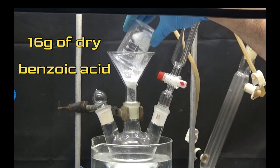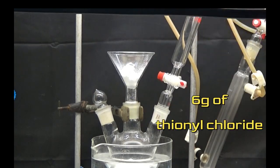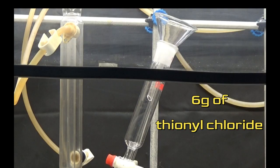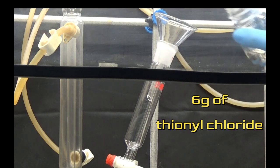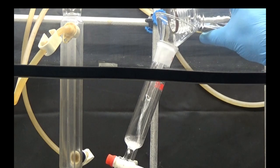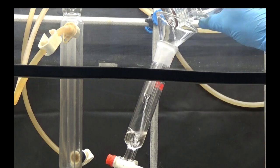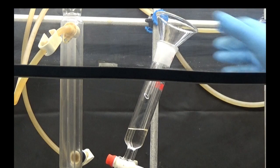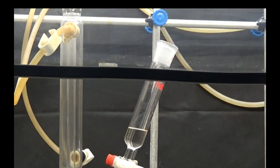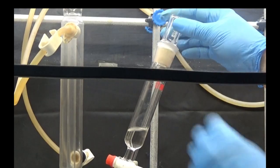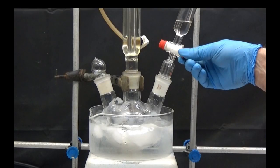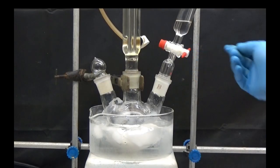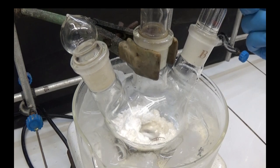Put 16 grams of dry benzoic acid in the flask and 6 grams of thionyl chloride in the addition funnel. Add the thionyl chloride slowly over the acid with stirring while cooling with the ice bath.